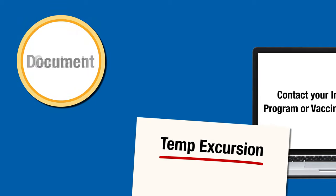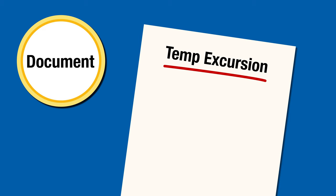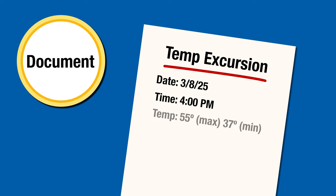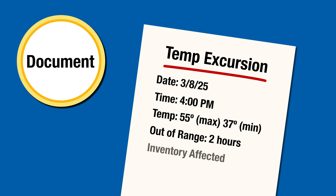Finally, document the event. Give a general description of what happened, including the date and time of the excursion, the storage unit temperature including the minimum and maximum readings if available, the length of time the unit was out of range, and the inventory affected.